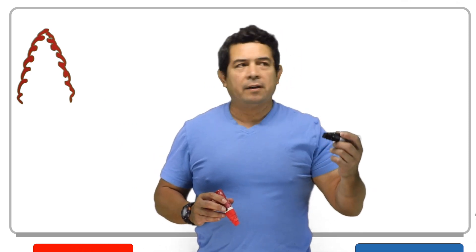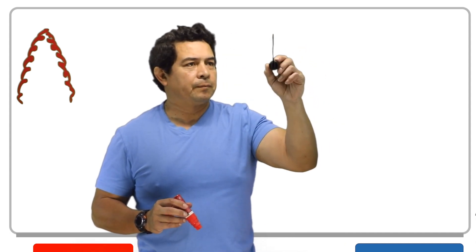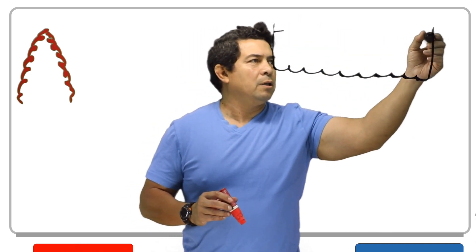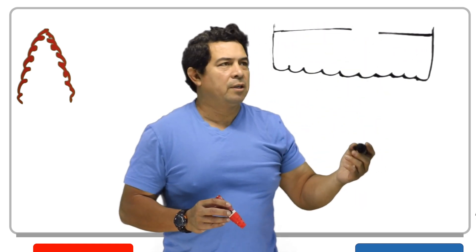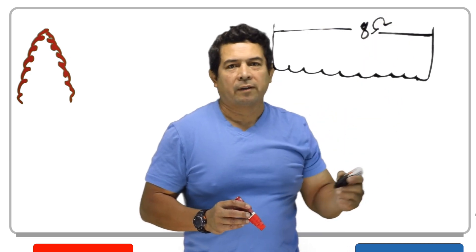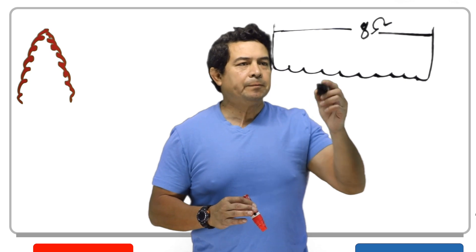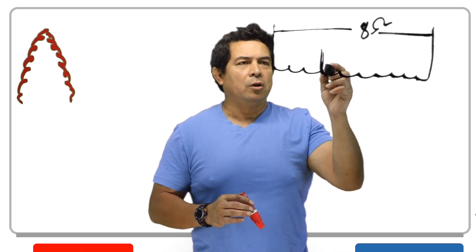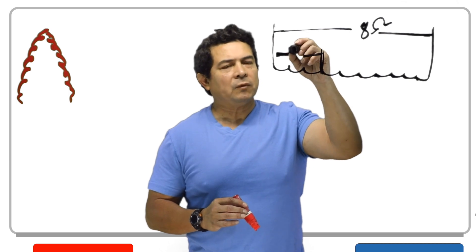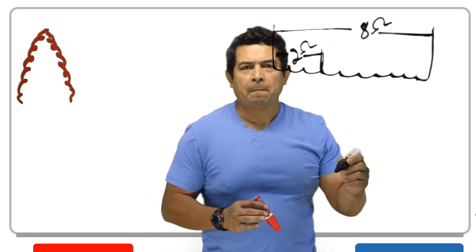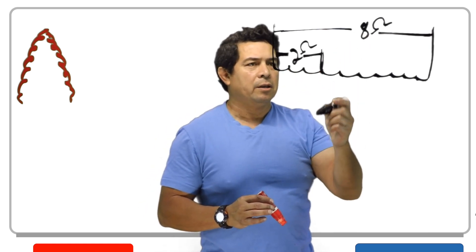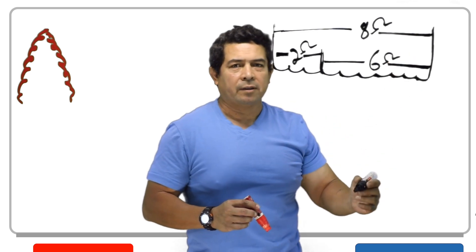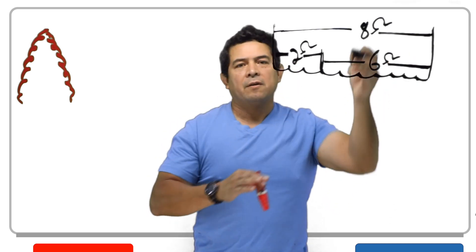Let's say we have this winding here. If I take an ohm reading between here and here, in this example I would get 8 ohms. Now if I make a connection right here and take an ohm reading between here and here, I would get 2 ohms. That's 2 ohms out of the 8, so on this side I would get a total of 6 ohms, because 6 plus 2 equals 8.